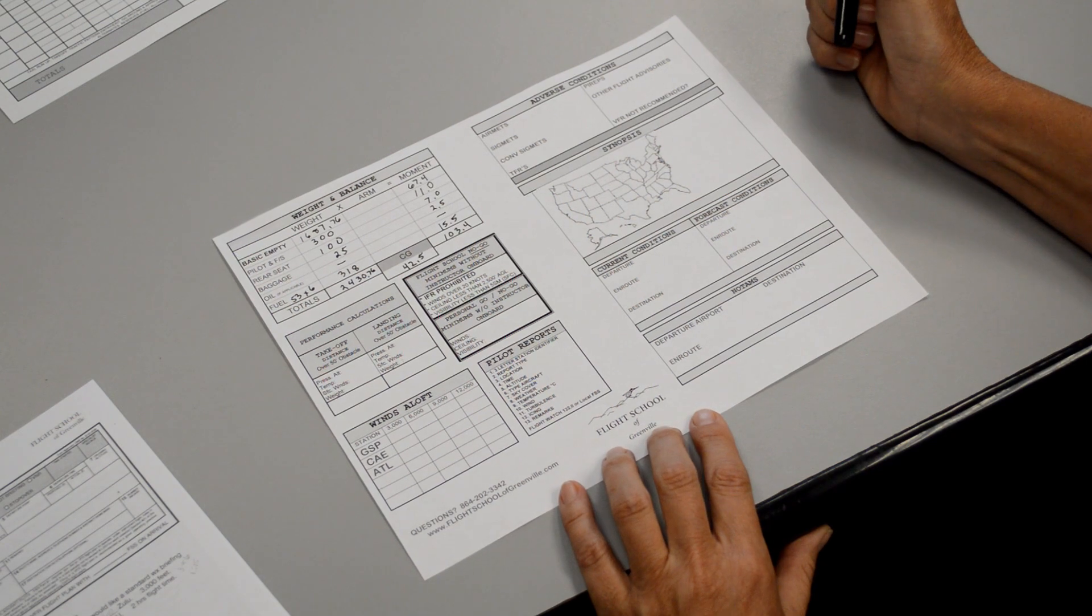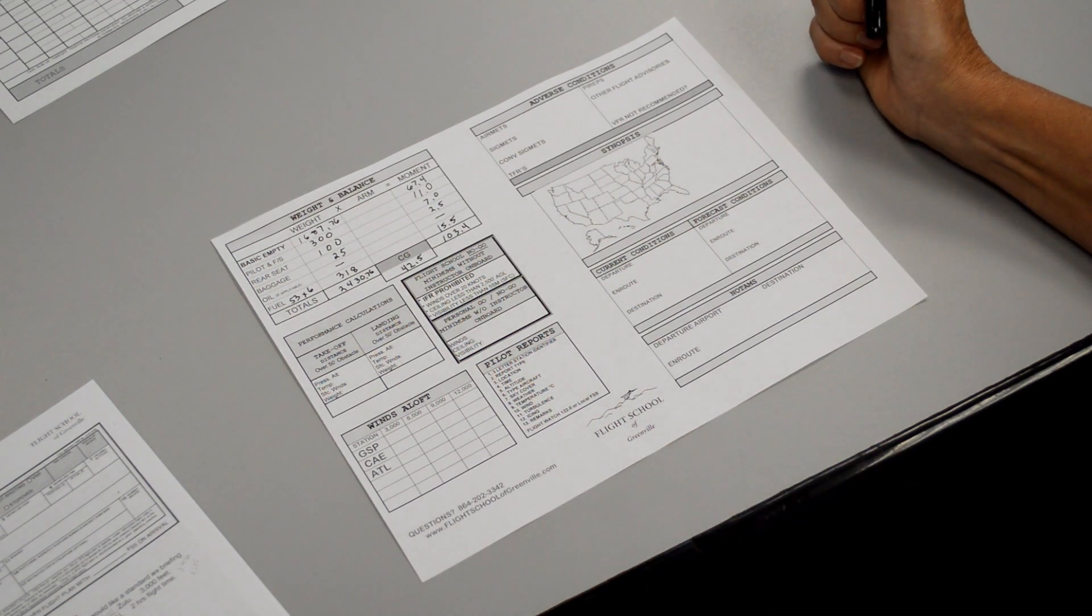So let's go ahead and call the flight service station on our 1-800-WX-BRIEF. Widest flight service. Hi. This is November 8-7-0 Sierra Papa. I would like a standard weather briefing for a VFR flight.